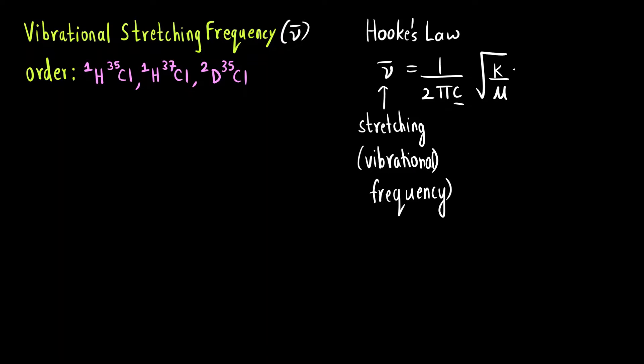C is speed of light. K is what? Force constant. And mu is what? Mu is reduced mass. What here we can do is we compare nu bar and reduced mass. And we can see they are inversely proportional.